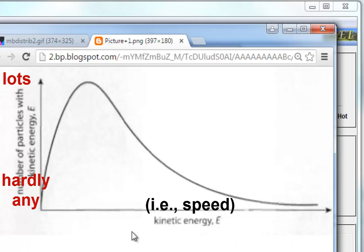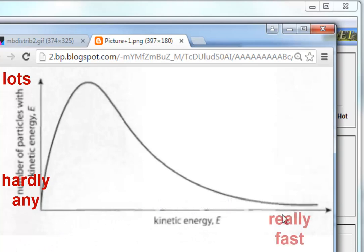Really, really fast on the graph is over here on the right. So tracking up and then across, the question is: how many are moving really fast? And the answer is hardly any.